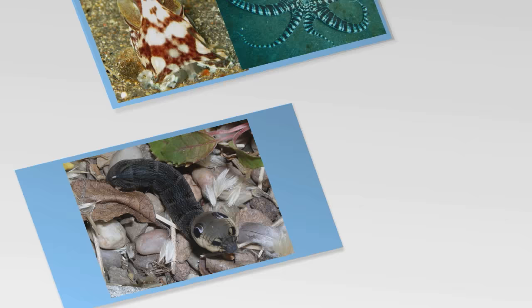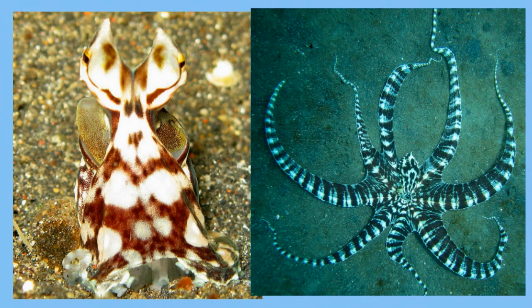This next animal, the mimic octopus, might be the king of camouflage and mimicry. It is able to change its color and shape to look like lots of objects around it. Yes, this is the same animal on the left and the right — it is just changing color and shape.